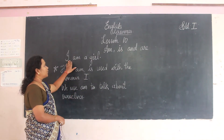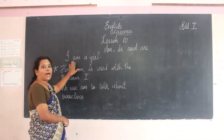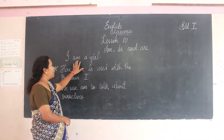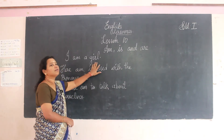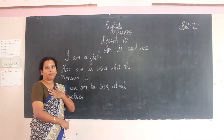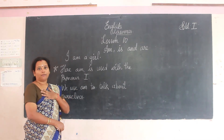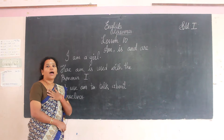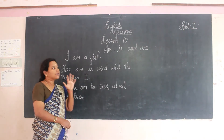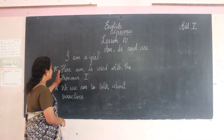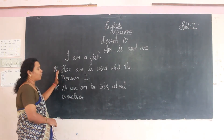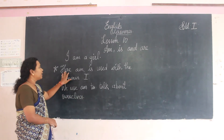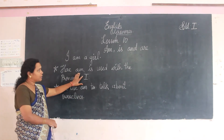See here, I have written one sentence: 'I am a girl.' So I am telling about myself. I am a teacher. I am a doctor. See here we have some conditions for where we have to use 'am'. Here 'am' is used.